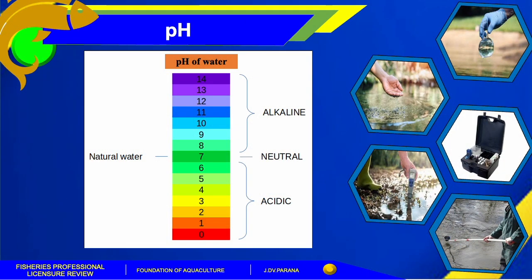Here we have an illustration of the pH of water. pH 7 is neutral; going down from 7 to 0, it is acidic. Greater than 7 up to 14, it is basic. The greater the deviation from pH 7, the more intense is the acidity or alkalinity of the natural water.